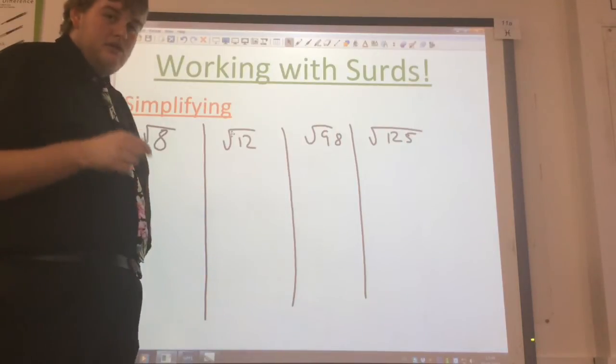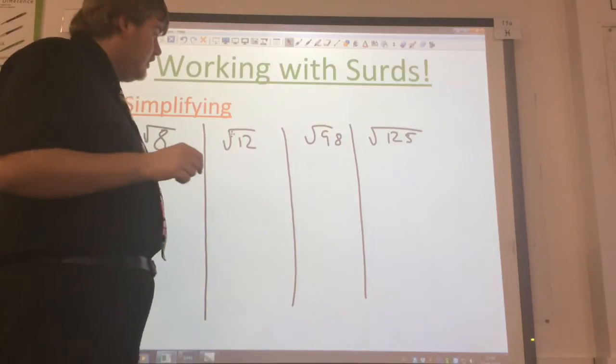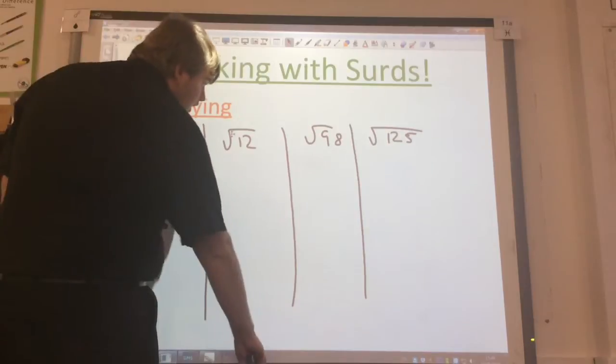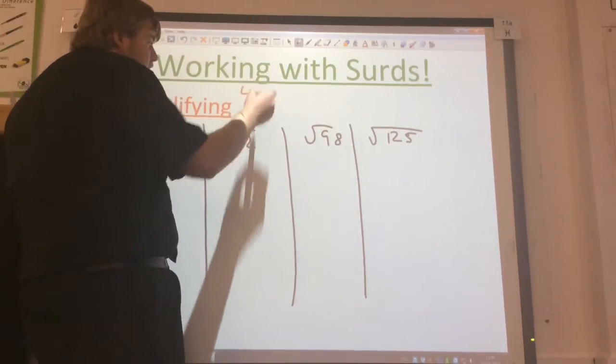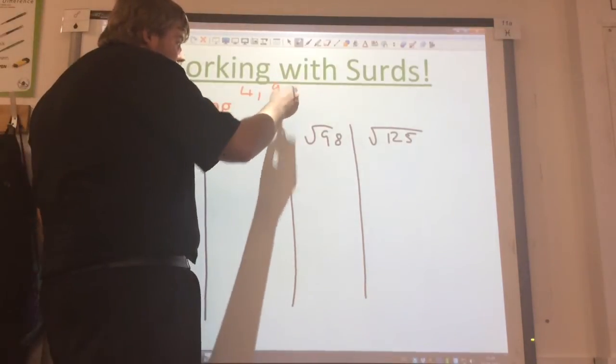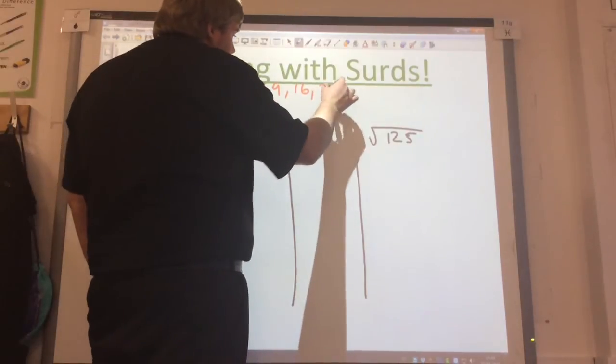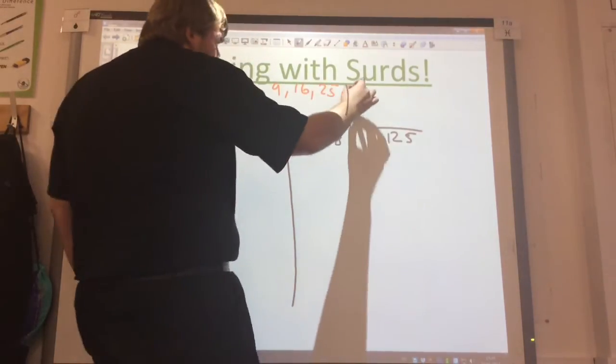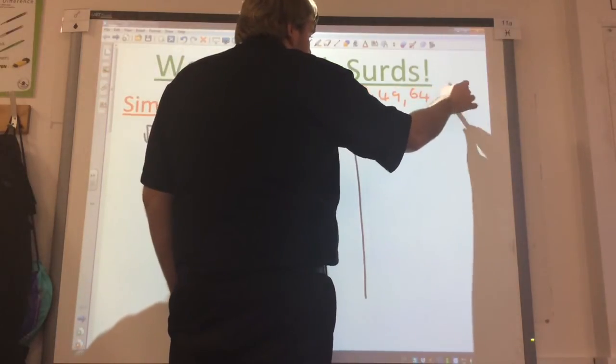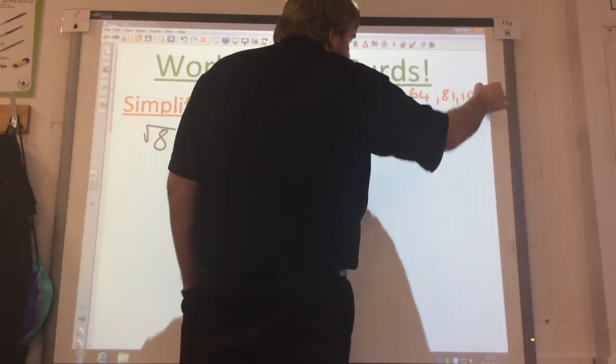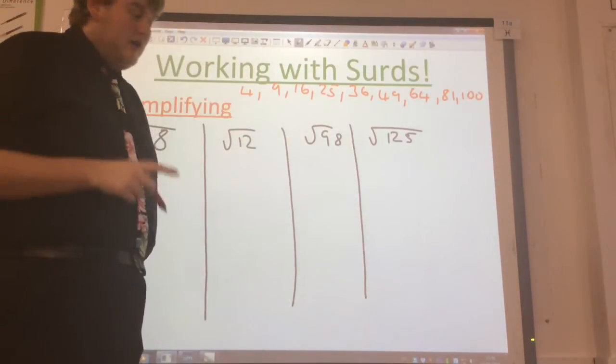Now when you're working with surds, you need to remember it's all to do with square numbers. So the first thing you need to do is remember your square numbers. Start off, 1 squared, don't need that, no use to us with surds. So we start with 2 squared is 4, 3 squared is 9, 4 squared is 16, 5 squared is 25, 6 squared is 36, and so on. Don't normally tend to need to go above 10 squared, so we know from 2 to 10 squared, that's our starting point.